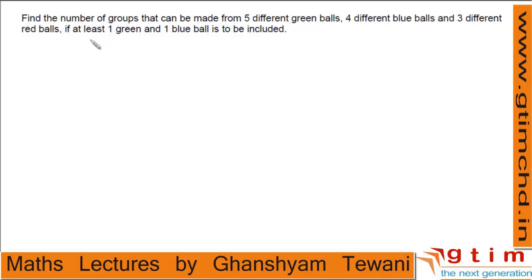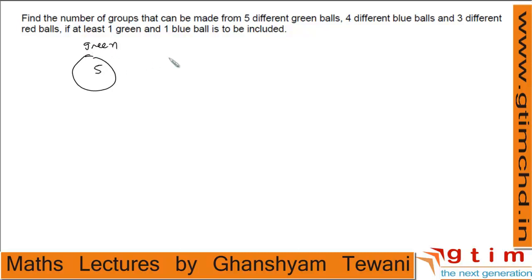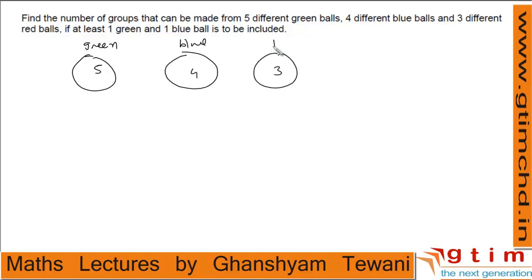Try this question: find the number of groups that can be made from 5 different green balls, 4 different blue balls, and 3 different red balls, if at least 1 green and 1 blue ball is included. We have 5 different green balls, 4 different blue balls, and 3 different red balls.